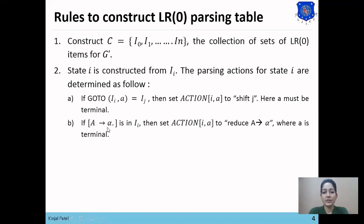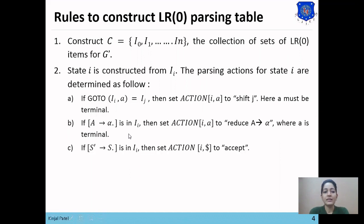The next rule is for the reduce entry. If there is a production A → α• (dot at the end of the right-hand side), meaning the item set is a final state, then set action[I, A] to reduce A → α, where A is a terminal symbol. If our state is a final state, set R entry from I on all terminals. Then, if S' → S• is in Ii, set action[I, $] to accept.